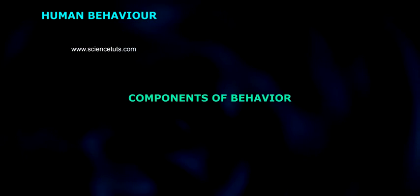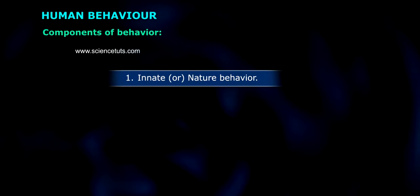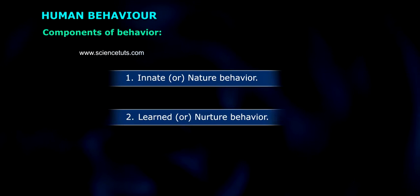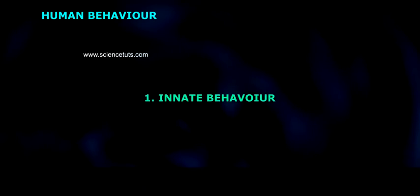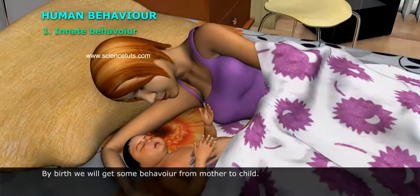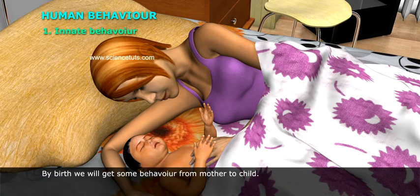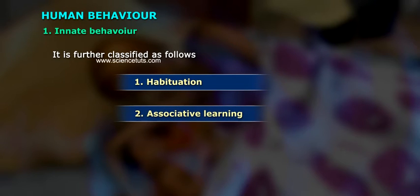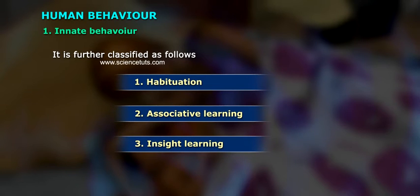Components of behavior: one, innate or nature behavior, and two, learned or nurture behavior. Innate behavior is present by birth — we get some behavior passed from mother to child. It is further classified as follows: one, habituation; two, associative learning; three, insight learning.